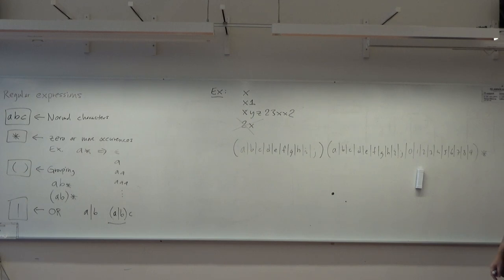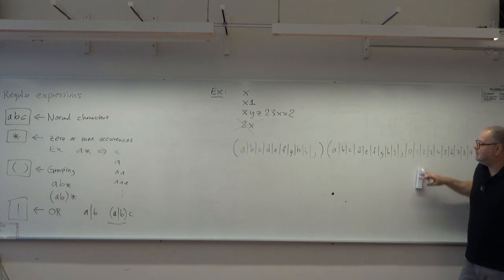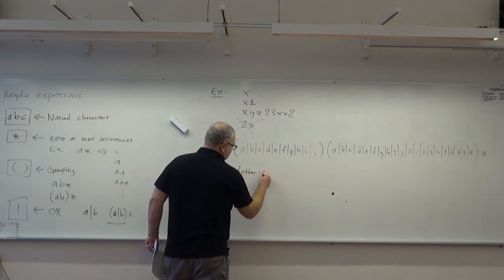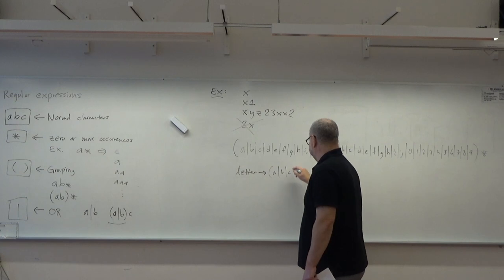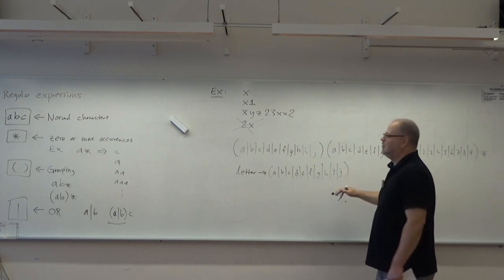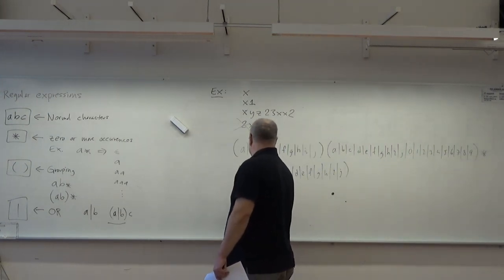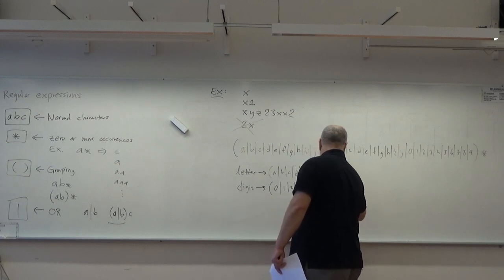One thing we can use is macros, similar to macros in the C preprocessor — you give a name to a pattern. For example, letter expands to a|b|c|d|e|f|g|h|i|j (our alphabet ends with j). And digit is 0|1|2|3|4|5|6|7|8|9. Now I can specify my identifier using these macros.